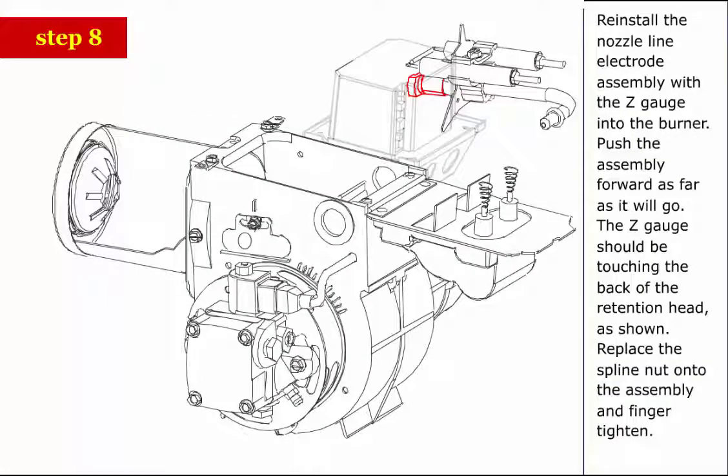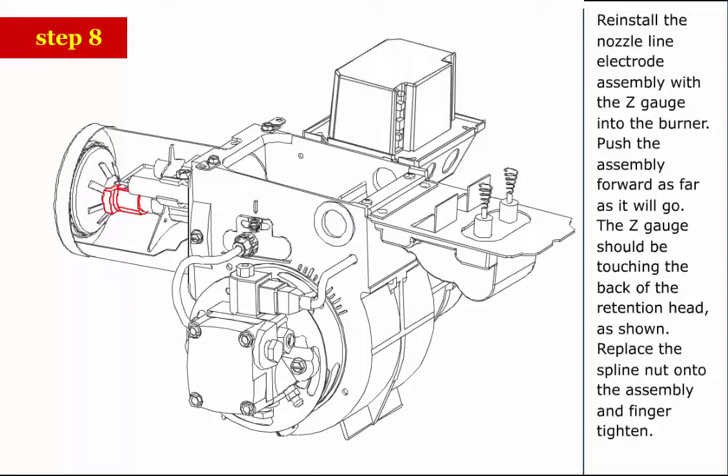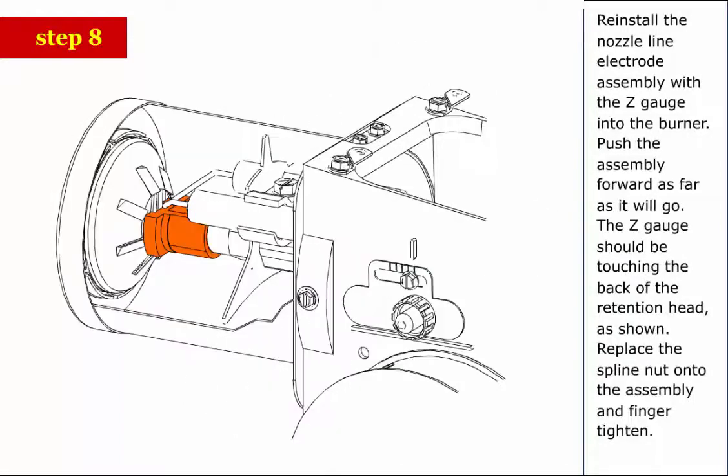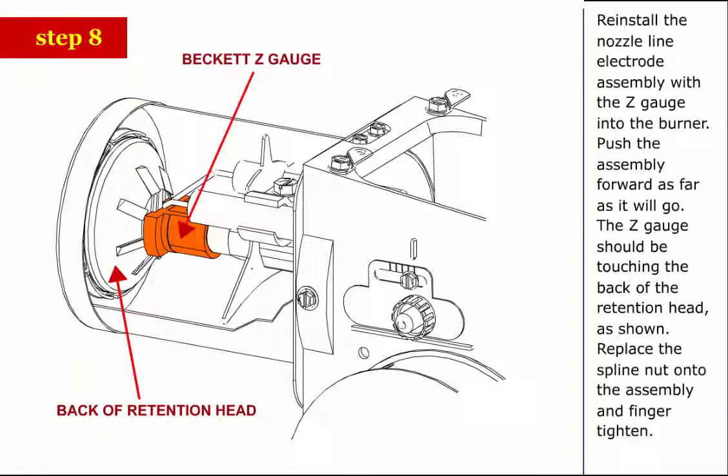Step 8: Reinstall the nozzle line electrode assembly with the Z gauge into the burner. Push the assembly forward as far as it will go. The Z gauge should be touching the back of the retention head as shown. Replace the spline nut onto the assembly and finger tighten.